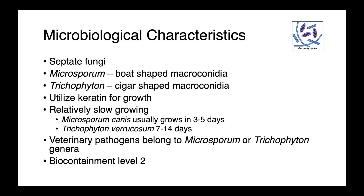Our most important dermatophyte species fall within the Microsporum and Trichophyton genera. These are all septate fungi, which means that the hyphae have these little divisions within them. Our Microsporum have characteristic boat-shaped macroconidia, while our Trichophyton have elongated cigar-shaped macroconidia. These organisms utilize keratin for growth, which is why we find them in the skin and hair, and they're relatively slow-growing in vitro. Microsporum canis typically takes three to five days to grow, while Trichophyton verrucosum takes one to two weeks.